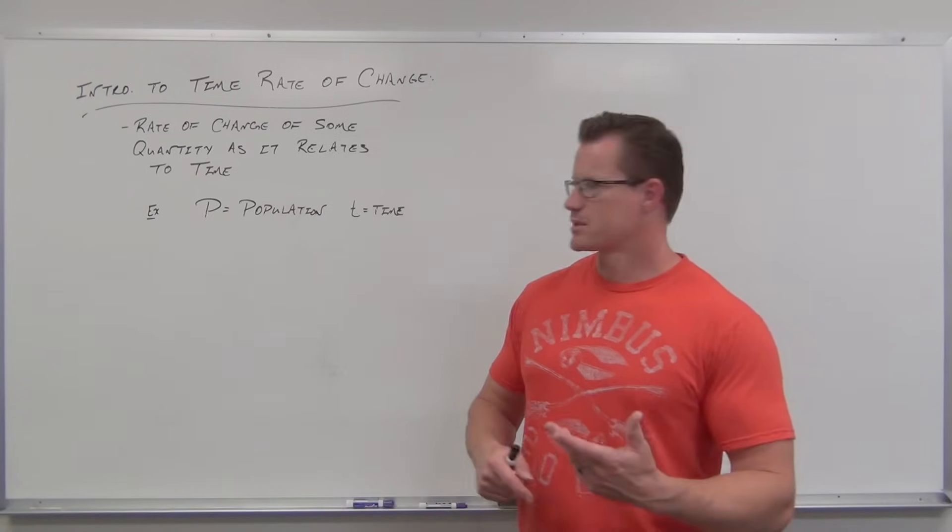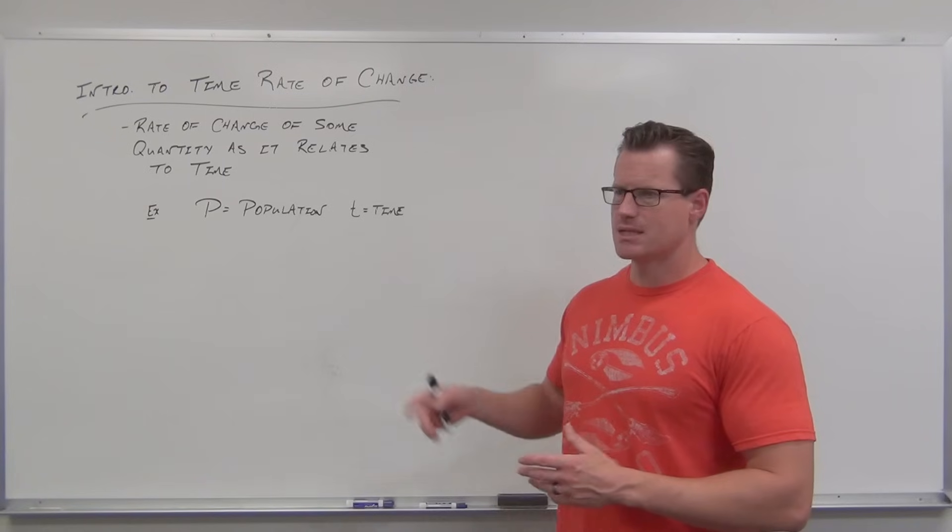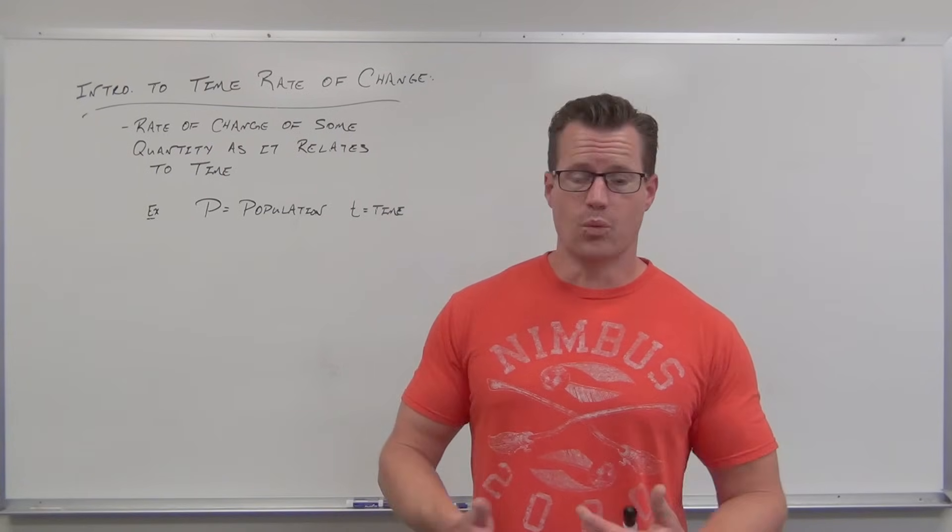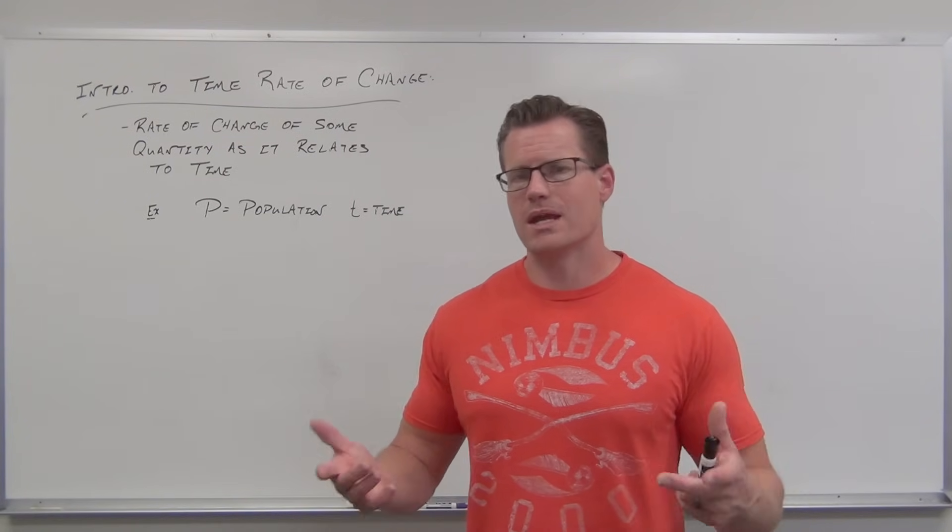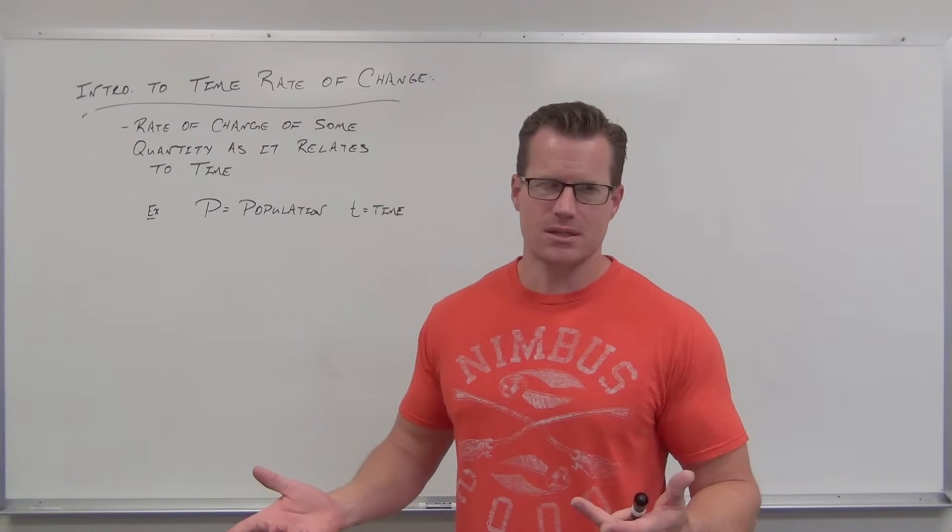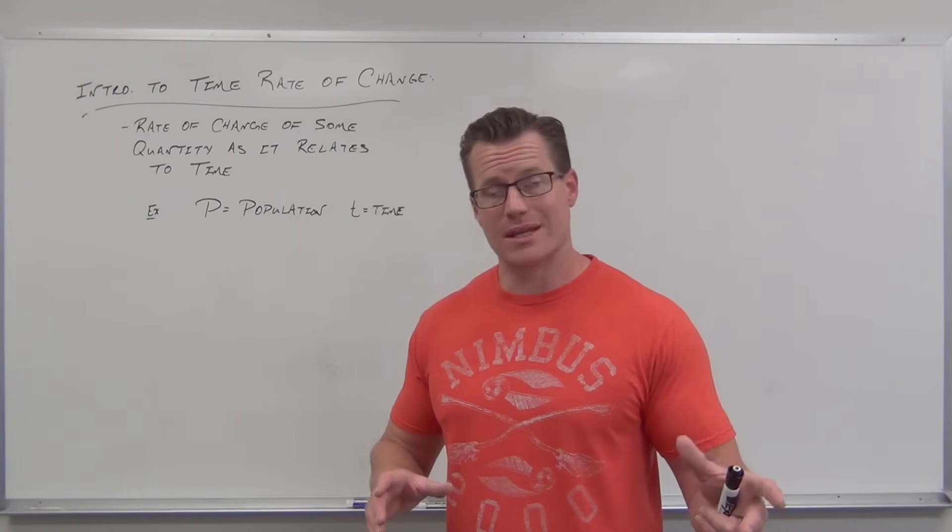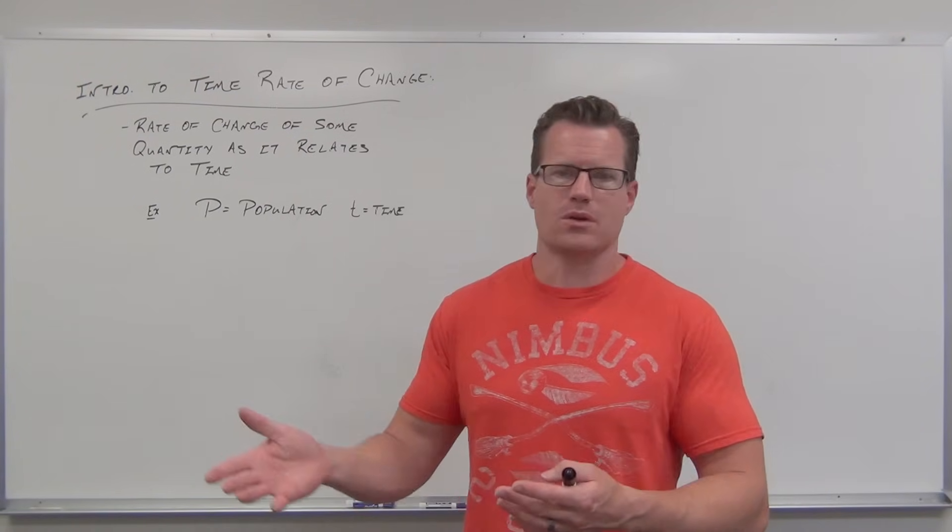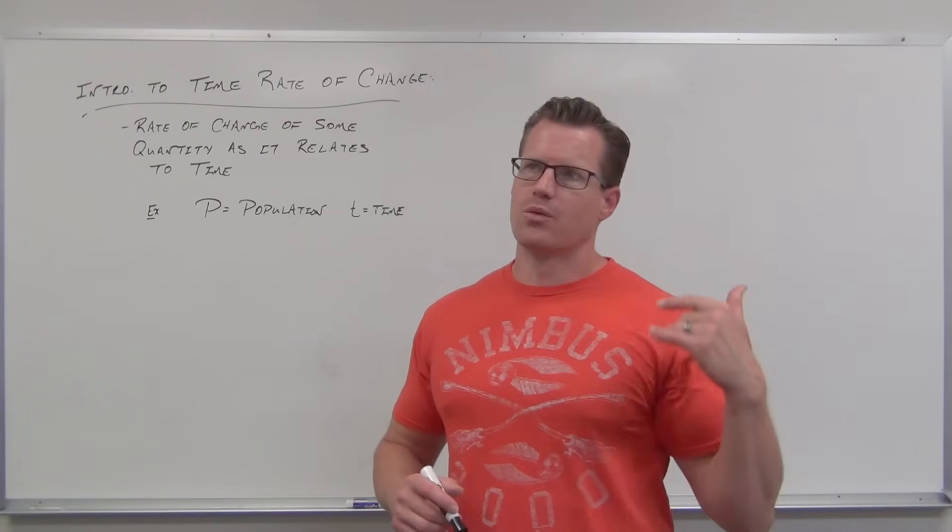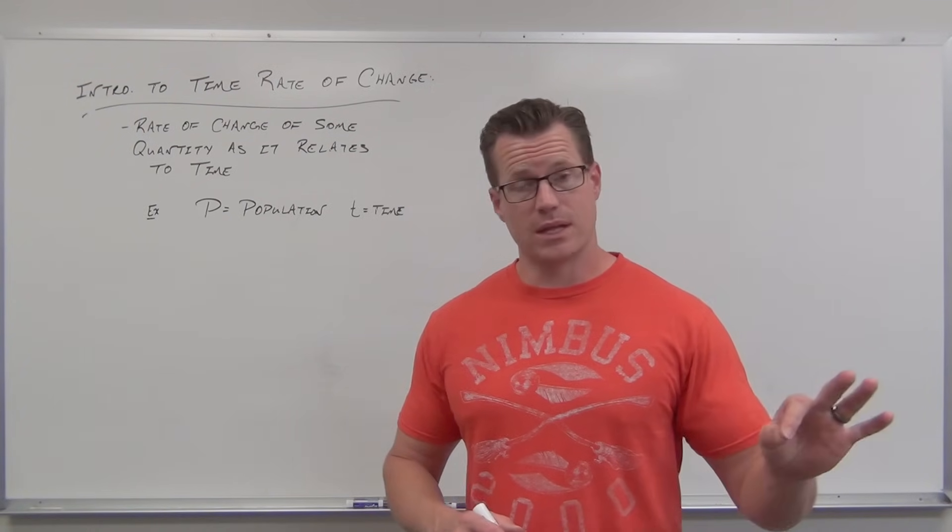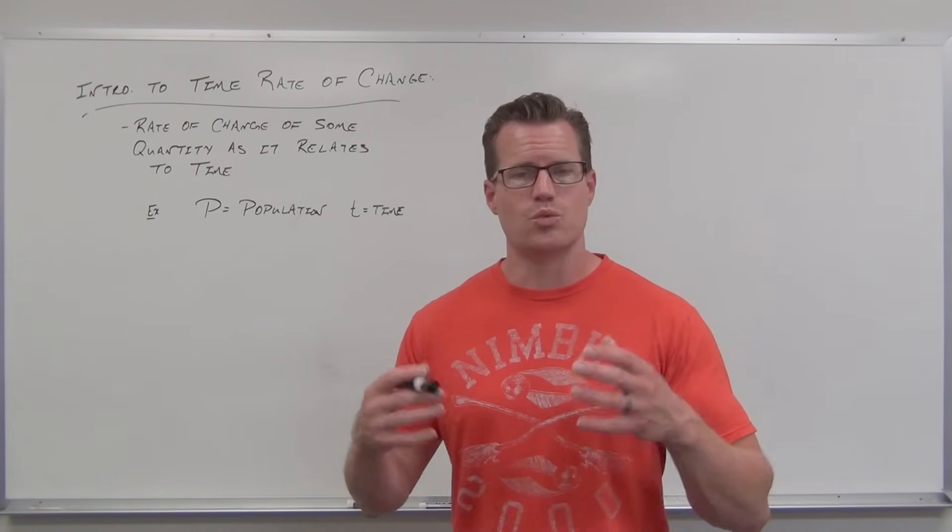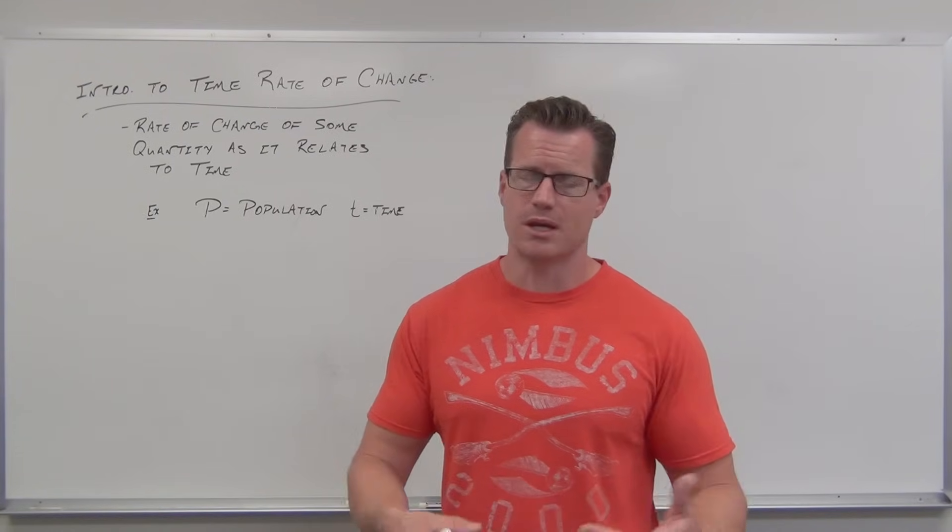So if we have P for population and T for time, I want to talk about where these differential equations are even coming from. Let's say that we want to determine the rate at which our population is increasing or decreasing. Not just a population because that's just a census. But how it's changing - that's important. That's planning. If we want to think about the rate of change of our population as it relates to time, well that's a derivative, isn't it? The way that our population is changing as it relates to time is a derivative of the population function with respect to time.